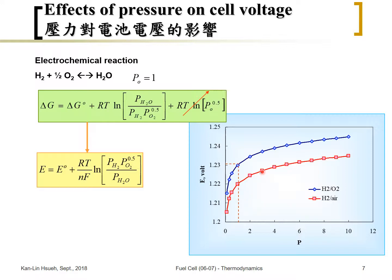From a thermodynamic point of view, it is preferred to operate the cell at as high a pressure as possible. However, in reality there are limits. For pure hydrogen stored in a pressurized tank, you can adjust to different pressures without a problem. On the air side, though, you need a compressor or blower to increase air pressure from ambient to the fuel cell operating pressure, and that compressor requires electricity supplied by the fuel cell itself.